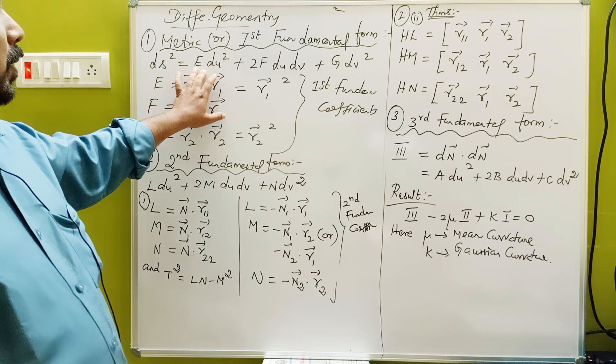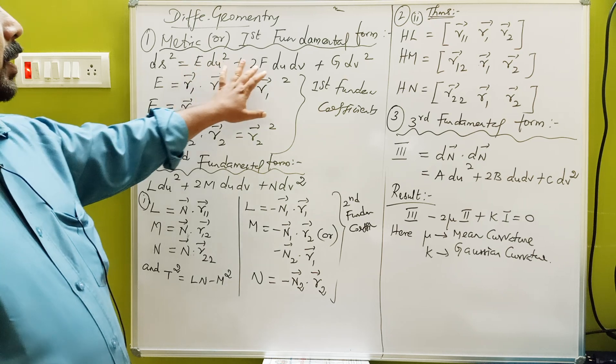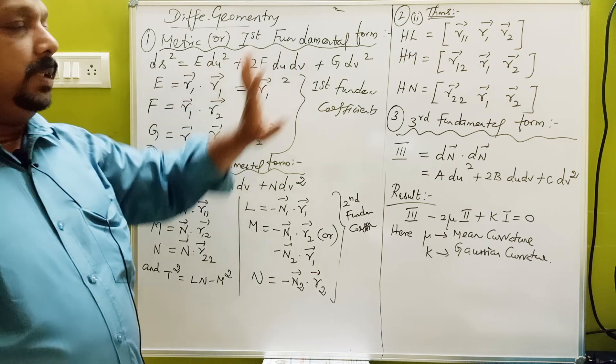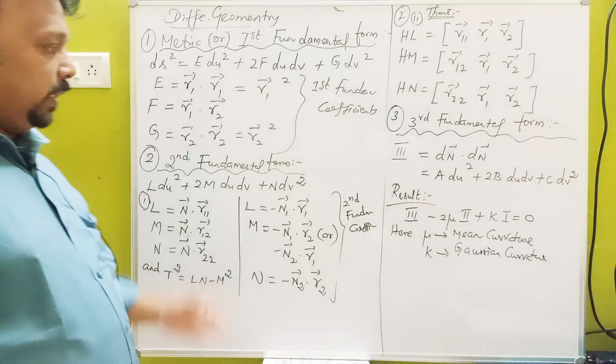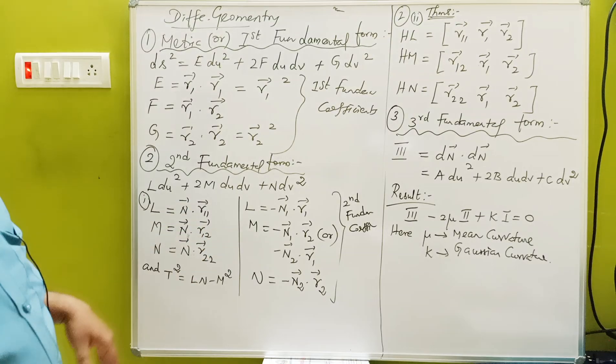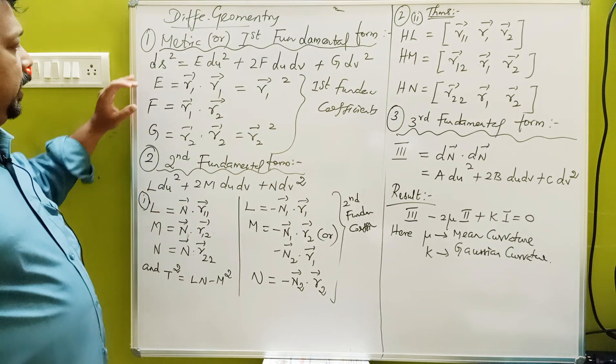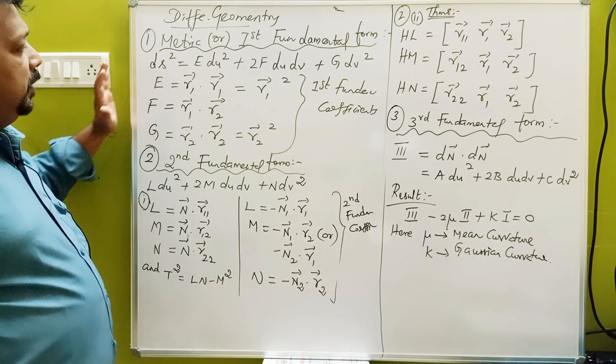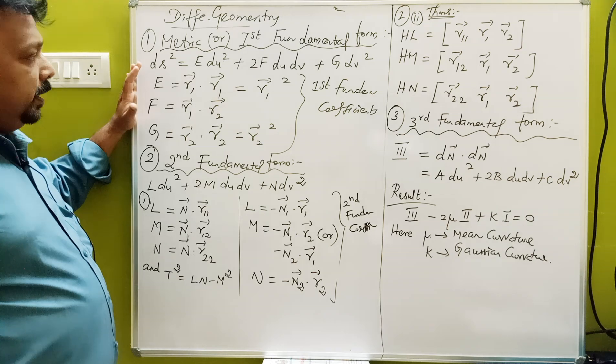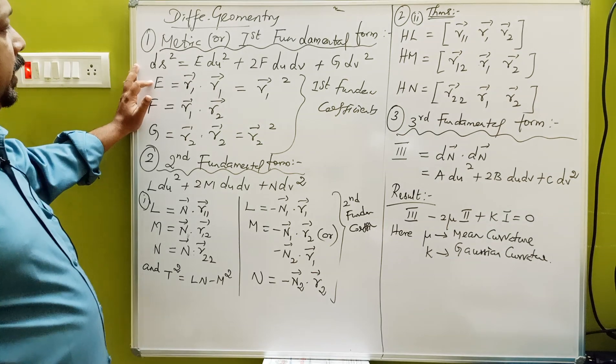What do we do? E, F, G — so that's the one. This is the formula. E, F, G.